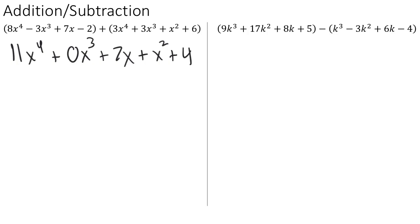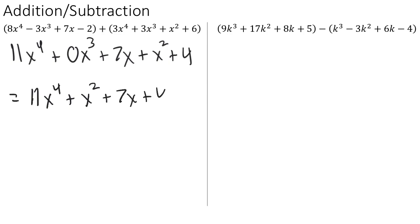So now we have our result, but we can clean it up a little bit. Notice here we have a 0x to the 3rd — 0 times x to the 3rd is just 0, so we don't really need to write this term. We can also write the terms in the standard polynomial order with the highest power first and then descending powers from there. So this would be equal to 11x to the 4th, we don't need the x to the 3rd term, then plus x squared, and then plus 7x plus 4.